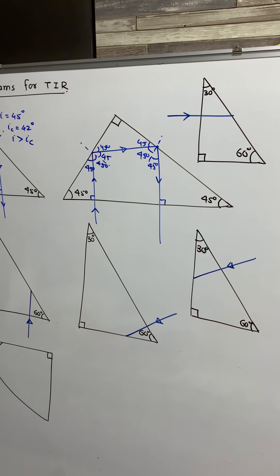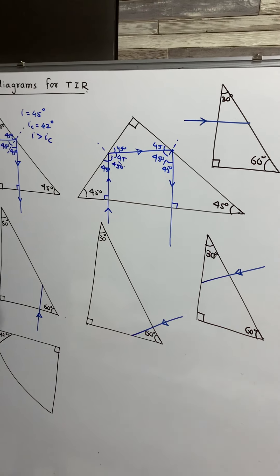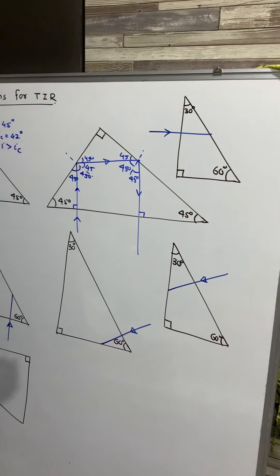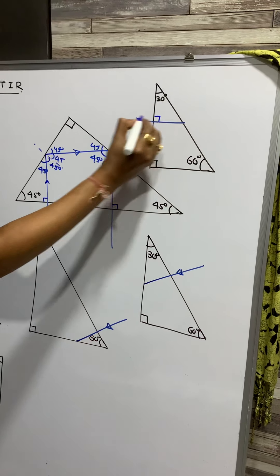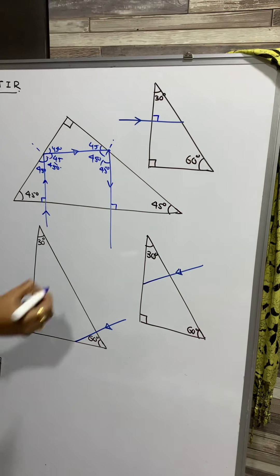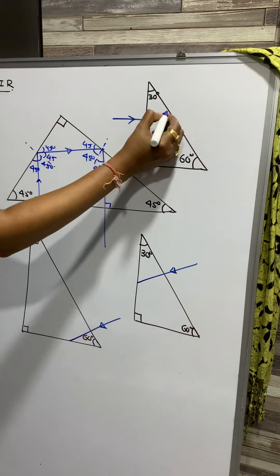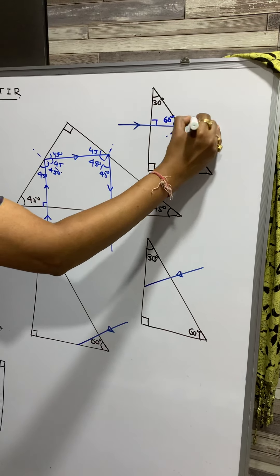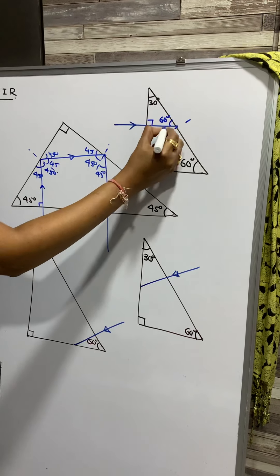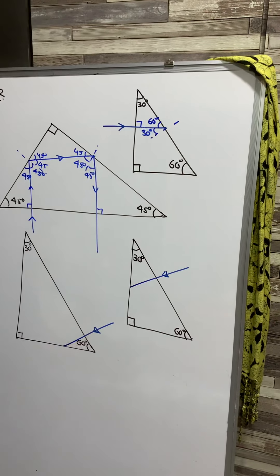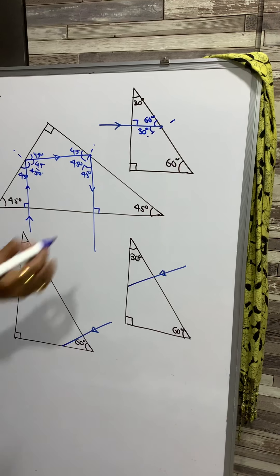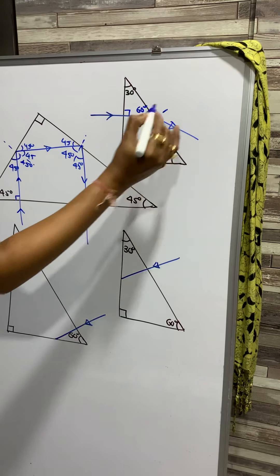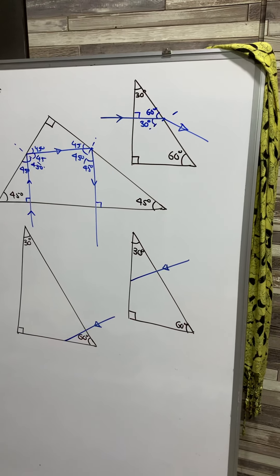Now there is a path in which there is no TIR — this is the 30-60-90 prism. This angle is 60 degrees. I will draw the normal here. This angle of incidence is less than the critical angle, so it will refract. The light goes from denser to rarer medium.